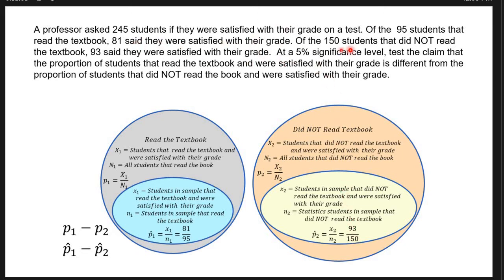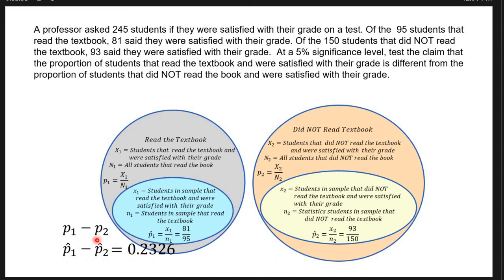Those numbers — 81 out of 95, and 93 out of 150 — give us two sample proportions, p-hat-1 and p-hat-2. To estimate the parameter P1 minus P2, I subtract the two sample statistics p-hat-1 and p-hat-2. That gives me the difference between the two sample proportions, which I use as my point estimate of the population parameter.